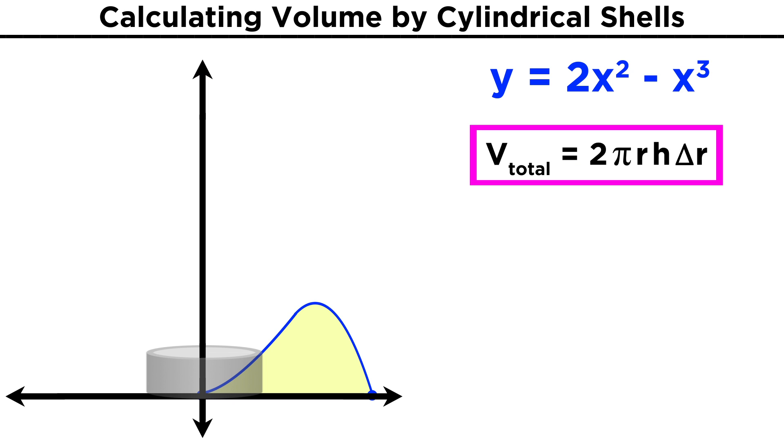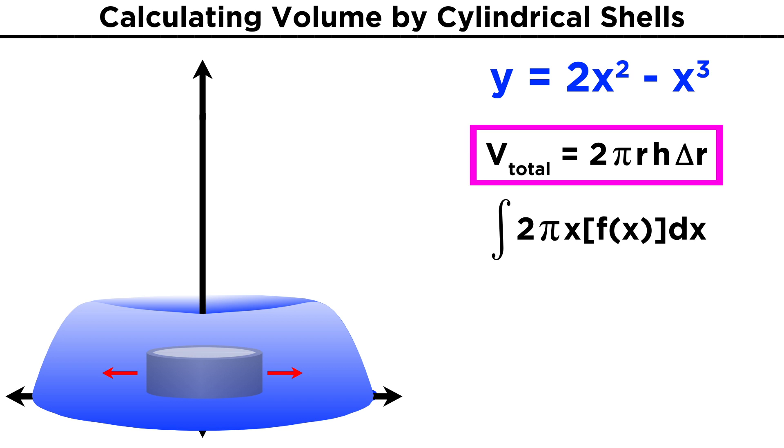The reason this is useful is that we no longer have to solve for X in terms of Y. If we picture one possible cylindrical shell, it will have a height that is equal to the function F of X, and a circumference equal to two pi X. As this shell spans the volume, we then simply have to integrate two pi X times F of X DX.